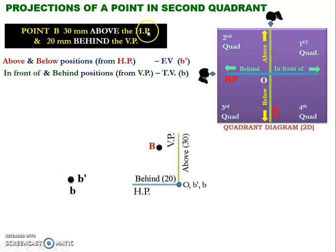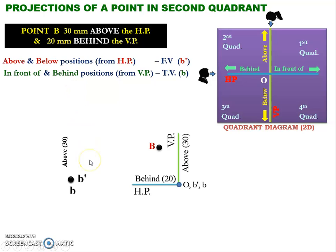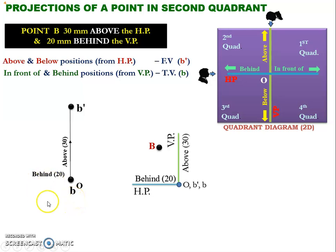Let us see the first half of the problem. It is given that point B is 30 mm above the horizontal plane, so the point b' needs to be moved in the upward direction for a distance of 30 mm. It is also given that the point is 20 mm behind the vertical plane, so we need to move the top view point in the behind direction, that is towards left, for a distance of 20 mm.